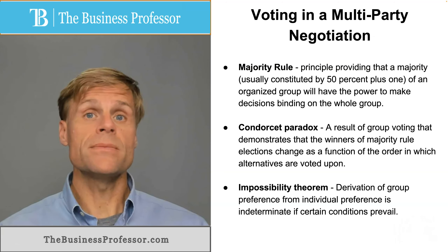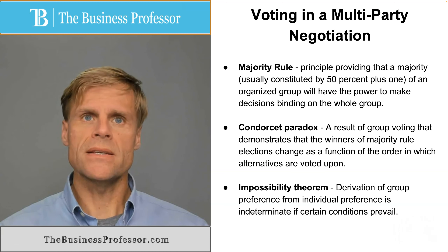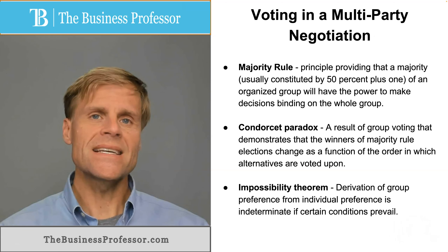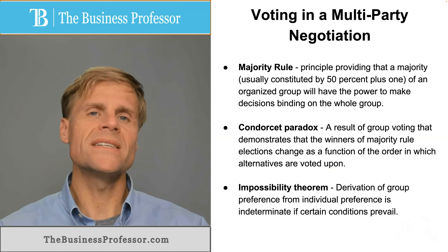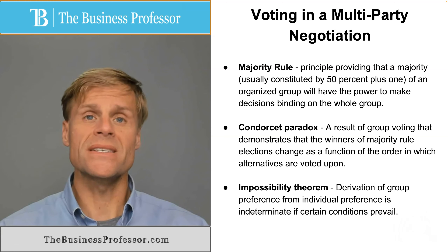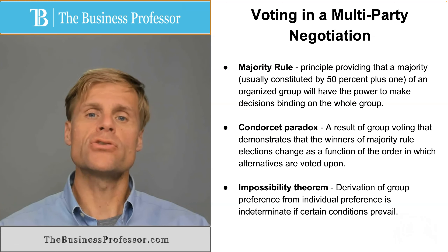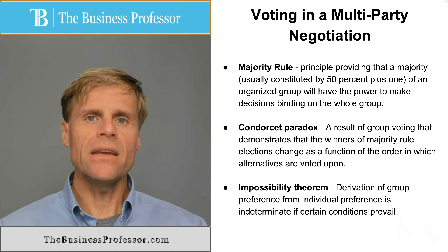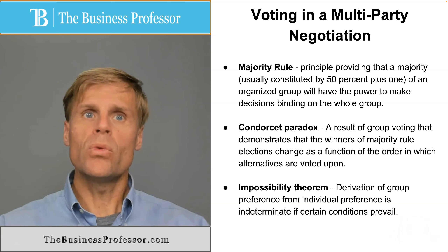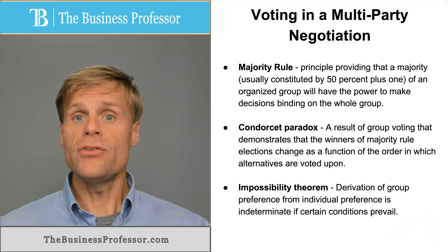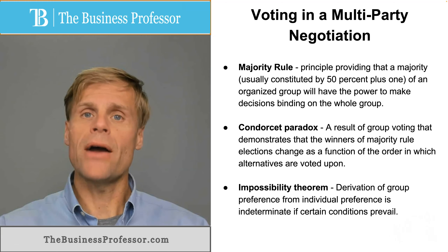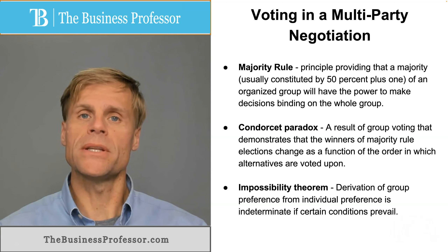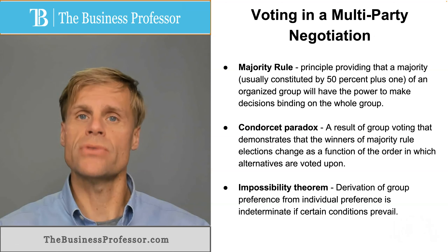Another difficulty is the impossibility theorem. Applied to negotiations, it says that deriving a group consensus or group preference from individual preferences is almost impossible or indeterminate if certain conditions are present. With this being said, if you can't come to a consensus within the group, how do you represent yourself to the other side? So in certain contexts, coming to a group consensus is going to be extremely difficult.